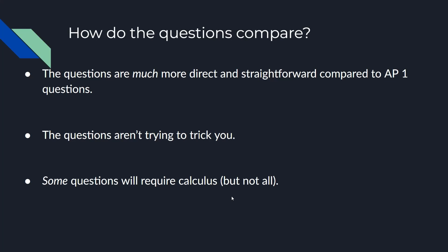Now one thing to keep in mind is how these questions compare with AP 1 questions. AP 1, as we've discussed, are very conceptual type questions. However, AP C tends to be very direct and straightforward, tends to focus more on calculation-based questions, and these questions aren't trying to trick you at all. AP 1 can be very tricky at times. AP C does not do that.